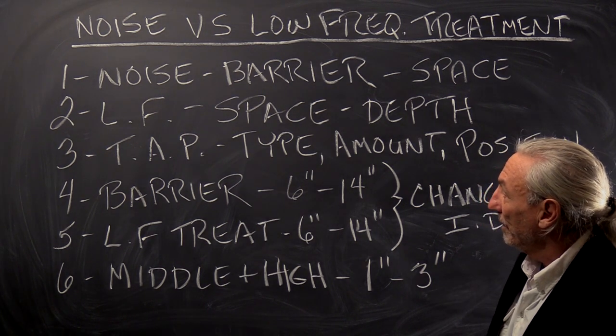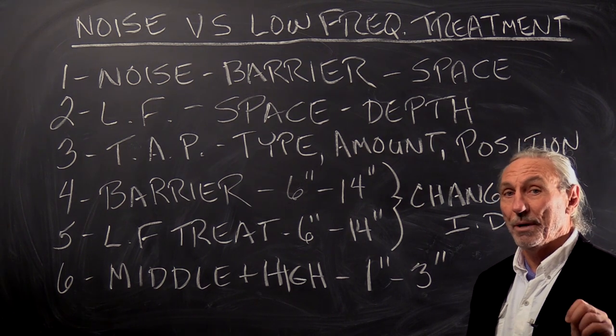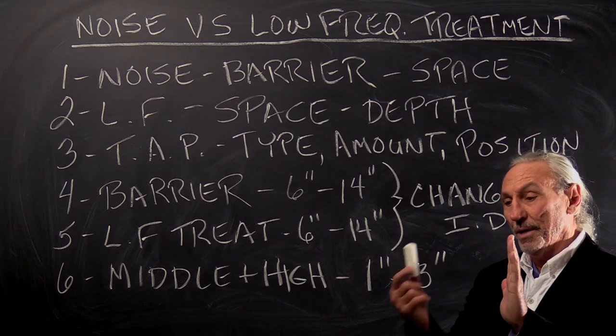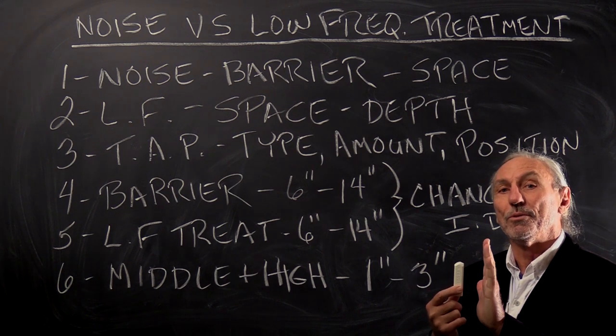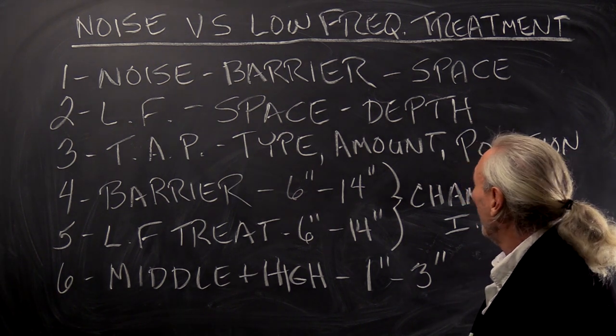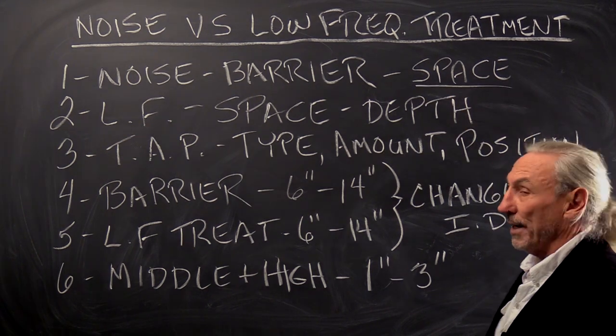So noise, we know we have to use a barrier. We have to put something between source and receiver. It's called a barrier. All barriers take space.